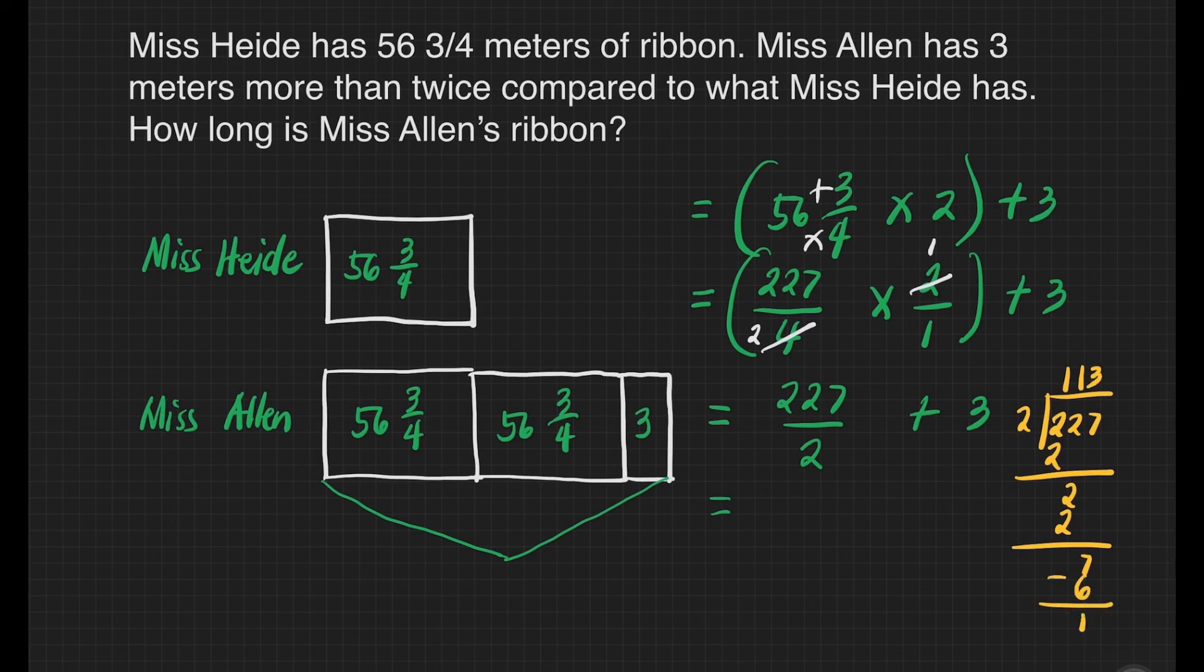Subtract. We have 1. So it means our answer here is 113 and 1/2 plus 3. So we can just add 113 plus 3. That's 116. Then copy 1/2.